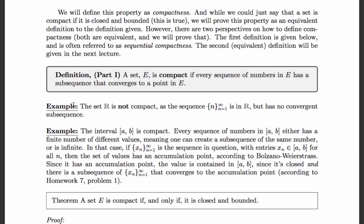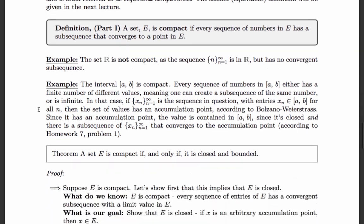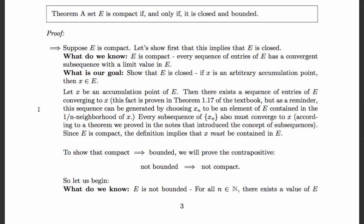A set can also be defined as compact if it's closed and bounded, and we're going to prove now that the sequential definition is equivalent to the property of closed and bounded. We'll first prove the forward direction: E is compact, therefore it is closed and bounded. We know E is compact, meaning every sequence of entries of E has a convergent subsequence with the limit value in E. Our goal is to show that E is closed — that is, if X is an arbitrary accumulation point of E, then X is in E — and to show that E is bounded.